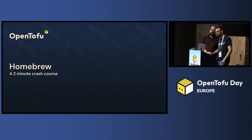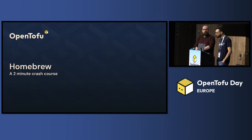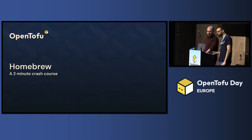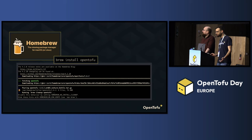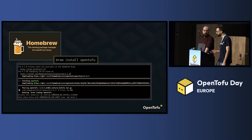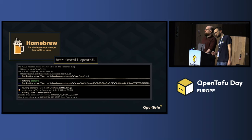Homebrew is a package manager for macOS. You can use it to download pretty much any package or binary — for example, 'brew install opentofu' will download and install OpenTOFU for you. Behind the scenes, Homebrew has a public repository called homebrew-core with all of the formulas. There are folders organized by the first letter of the binary name. In our case it's the 'O' folder where you'd find opentofu.rb.